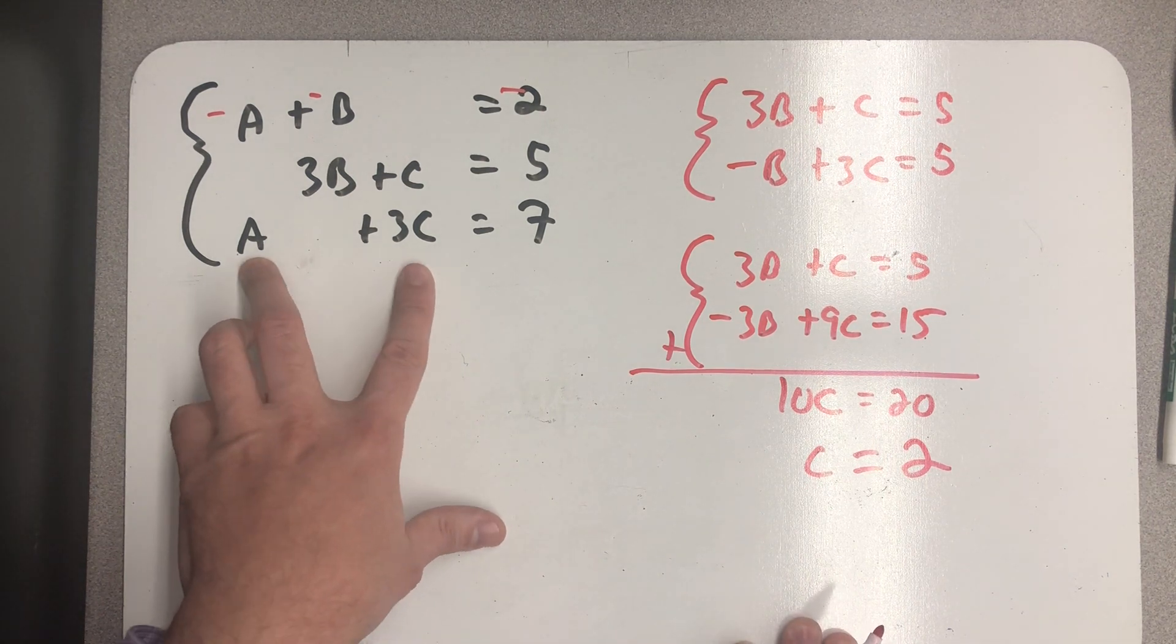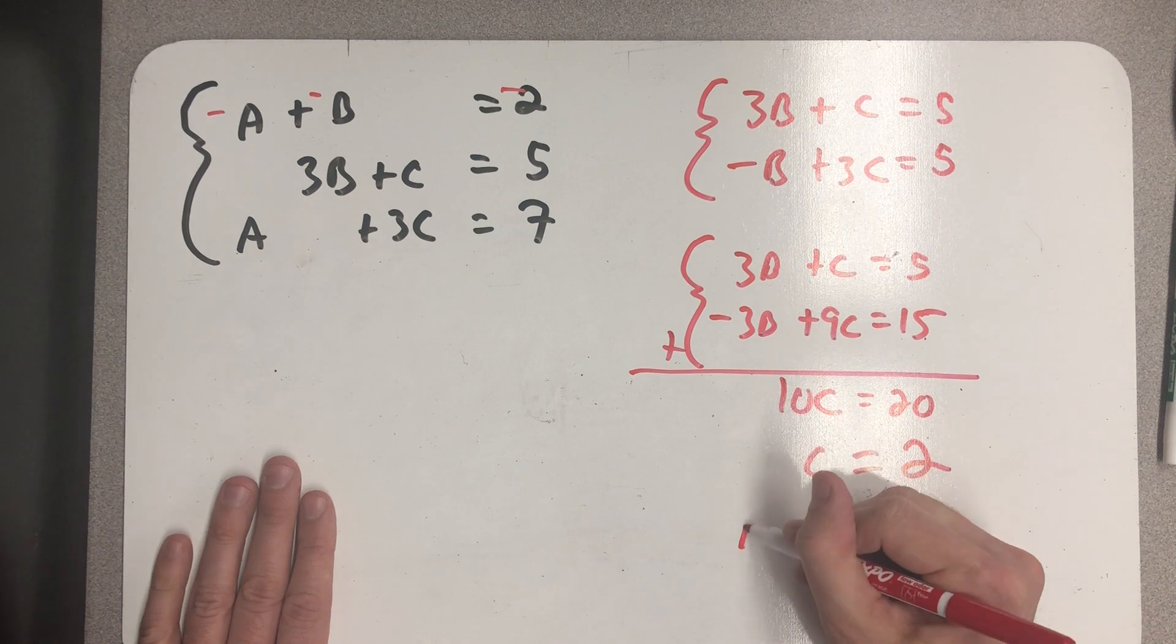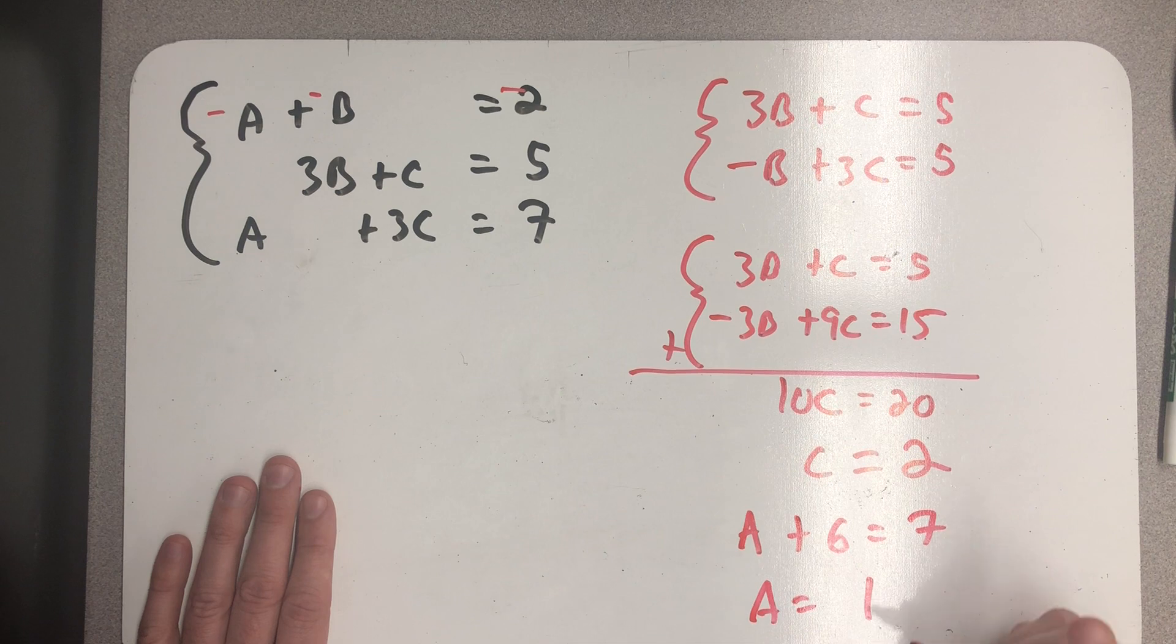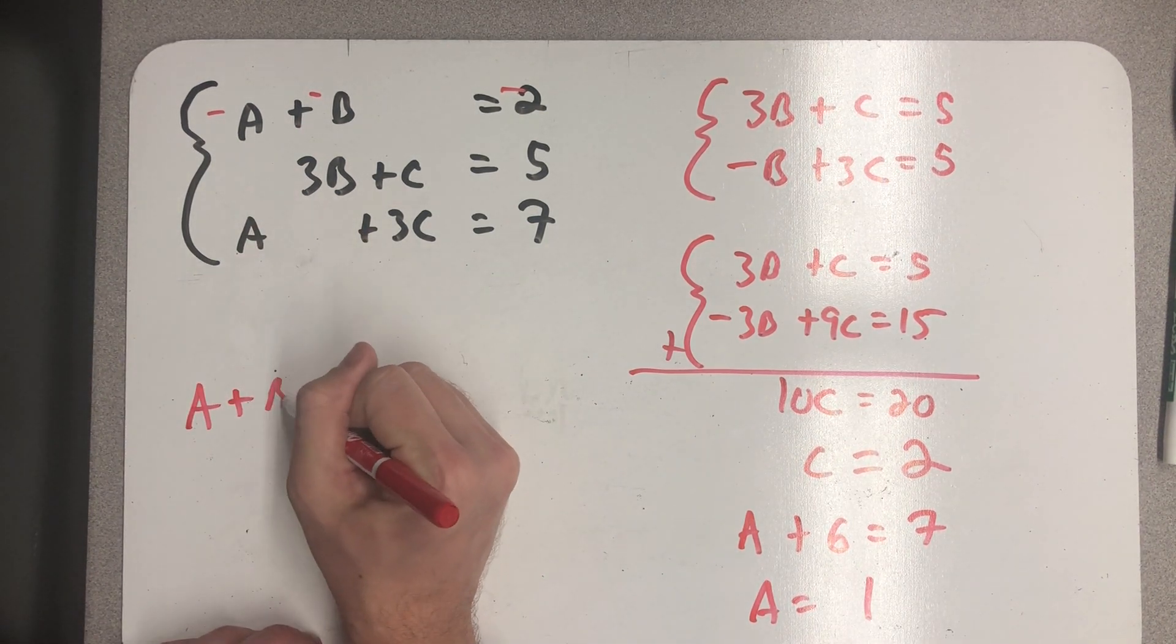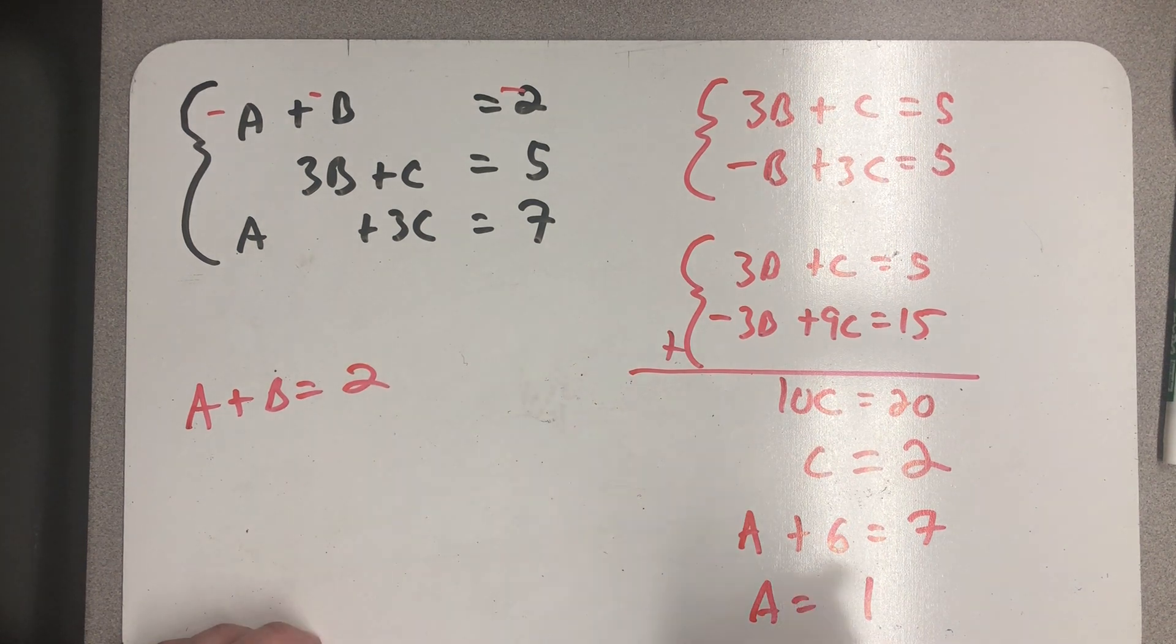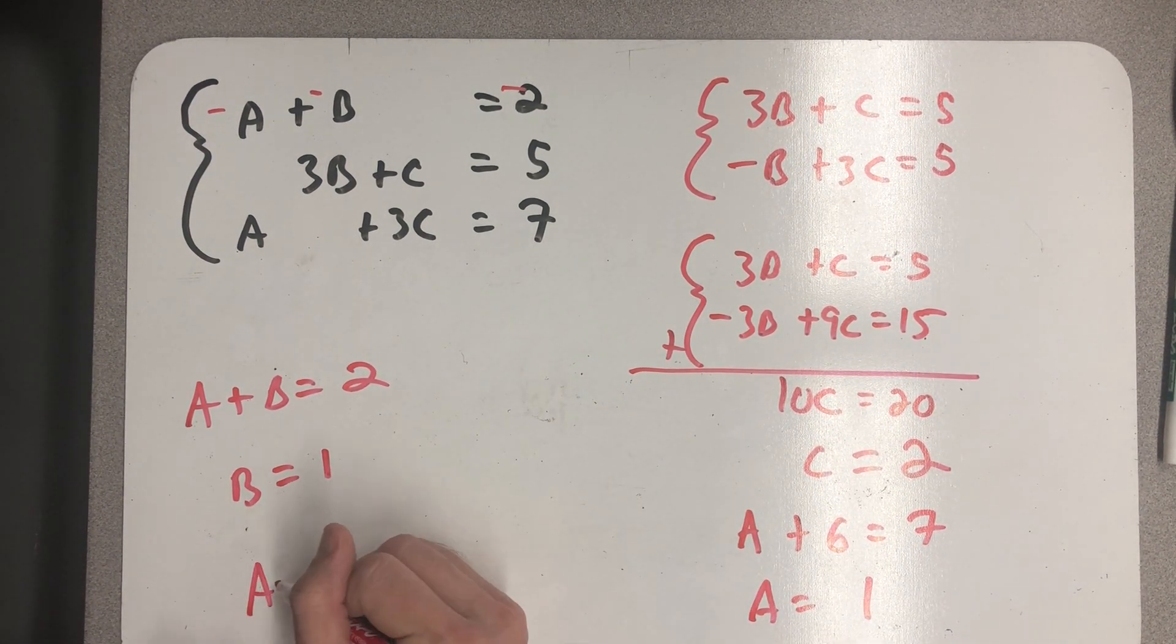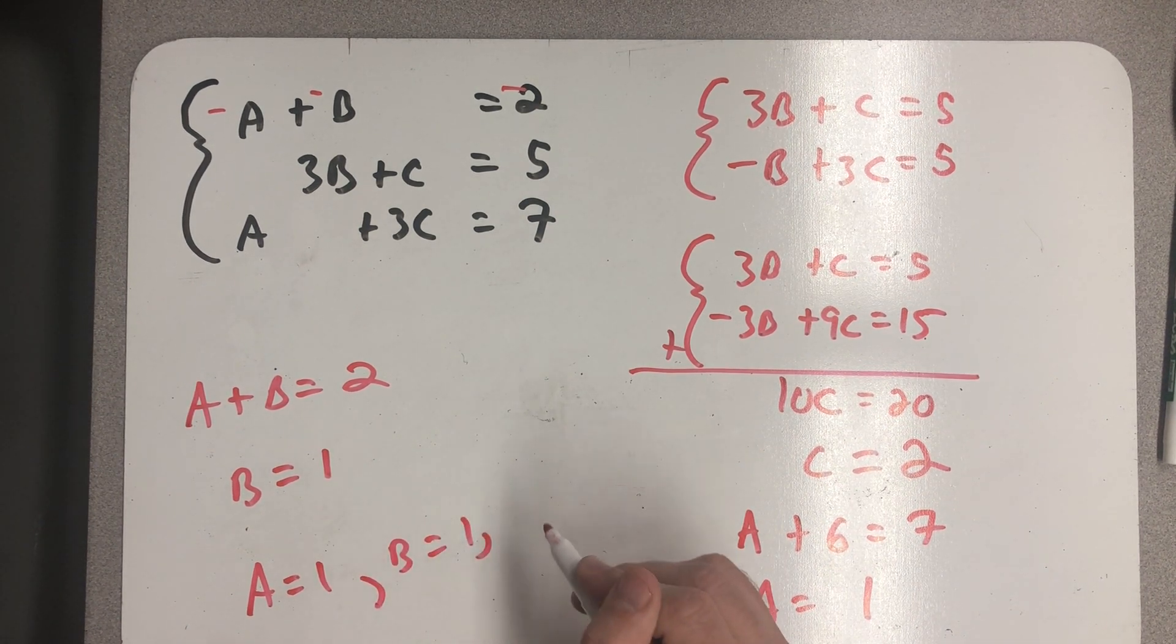Well, I know that a plus 3c is equal to 7. So, that tells me that a plus 6 is equal to 7. So, a is equal to 1. And finally, I know that a plus b had to be equal to 2. Well, if a is 1, then so is b. So, I found a, b, and c.